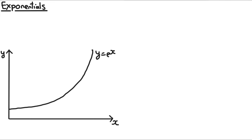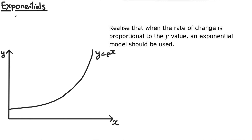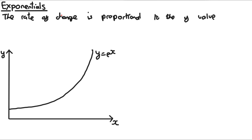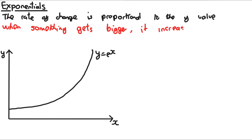e to the power of x is really useful for modelling a wide range of data. We can use it as a model when the rate of change is proportional to the y-value. Another way to say this: when something gets bigger, it increases faster. If either of these statements is true, then e to the power of x is a good model.